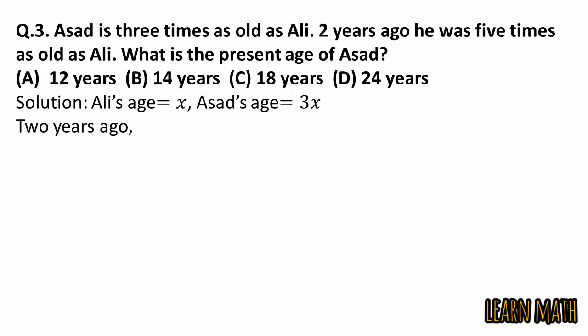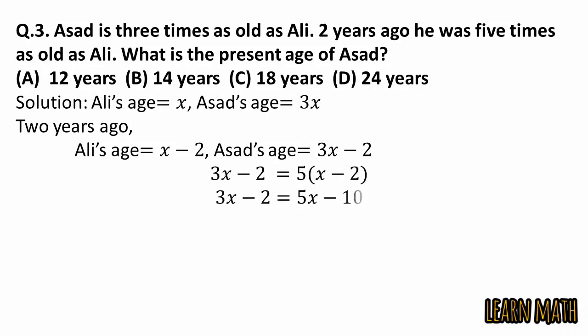So Asad's age is equal to 3X. Two years ago, Ali's age is equal to X minus 2 and Asad's age is equal to 3X minus 2. But according to the question, Asad's age was five times as old as Ali.